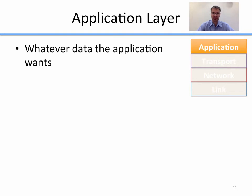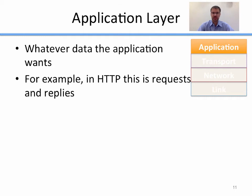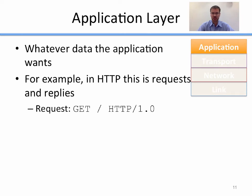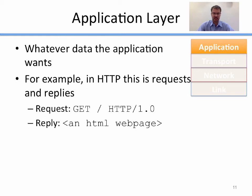The last layer is the application layer, which holds whatever data the application wants. In HTTP, for example, this is requests and replies. If I'm an HTTP client like a web browser, I might connect to a server on port 80 and send a request like "GET / HTTP/1.0," and the server might reply with the HTML web page at that location — all done in the application layer.